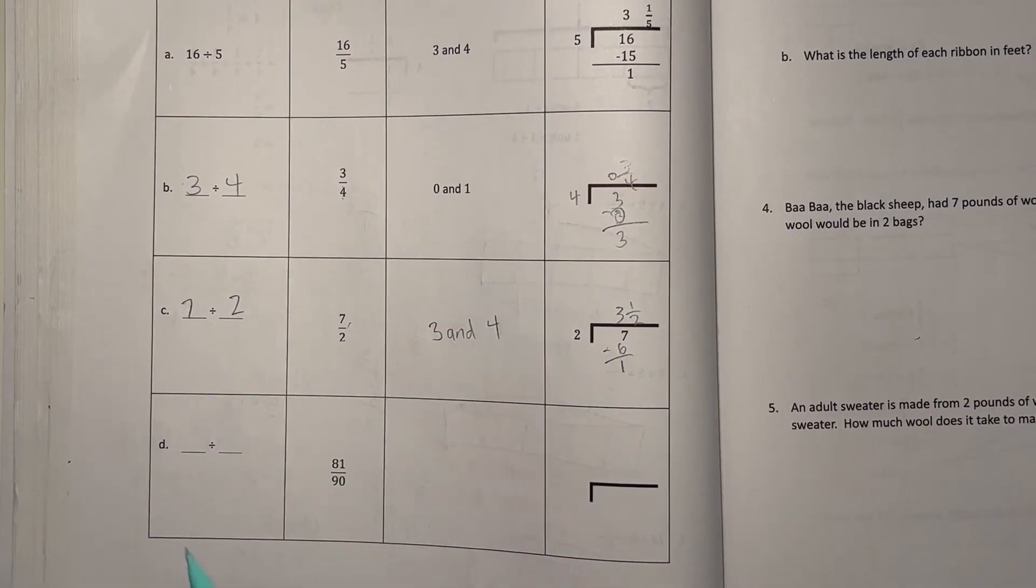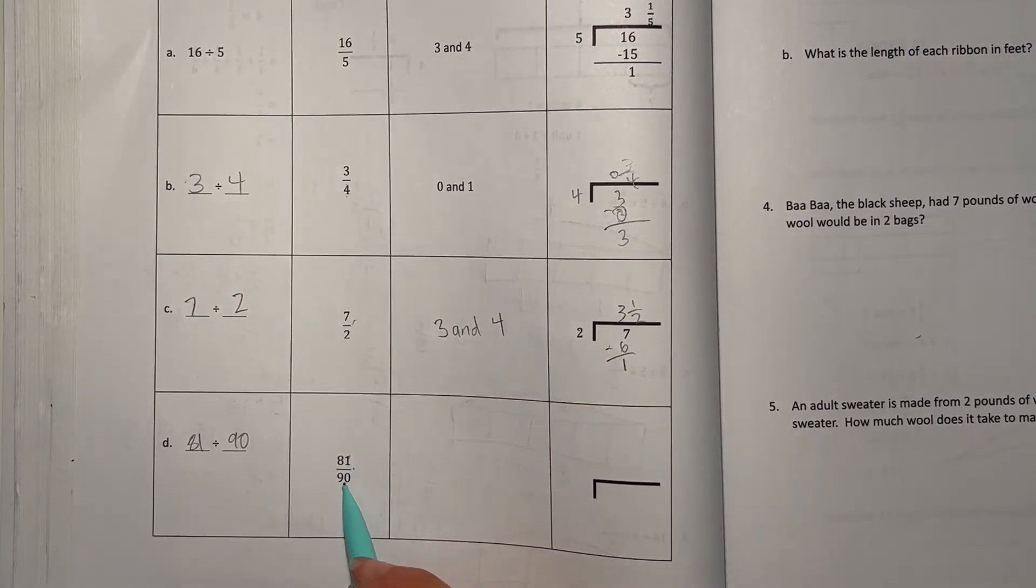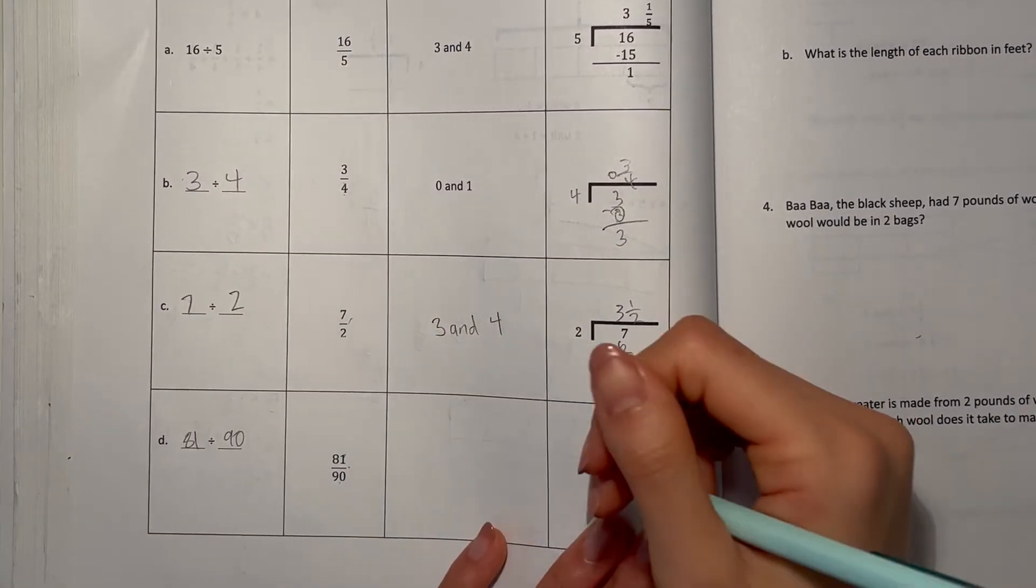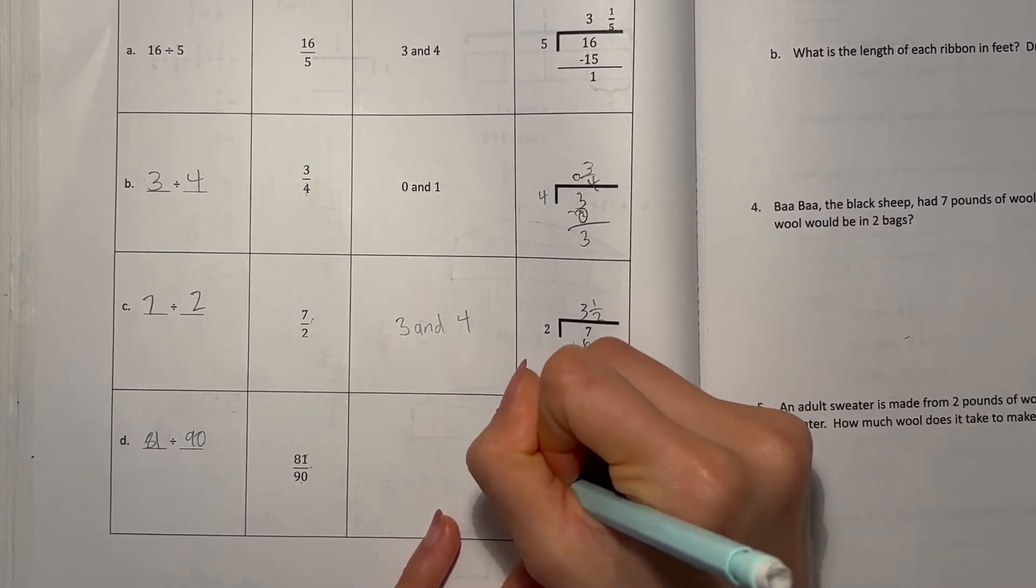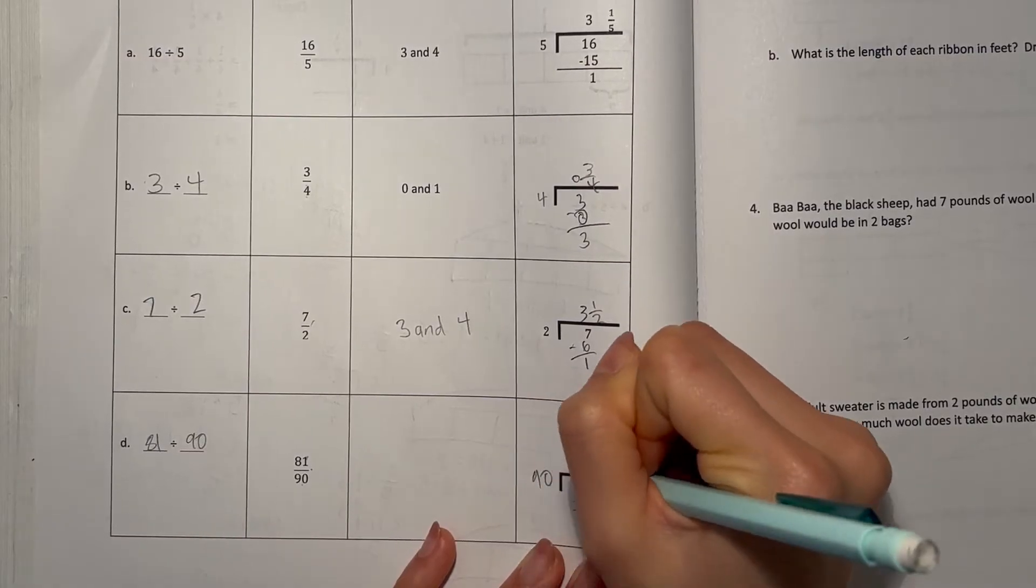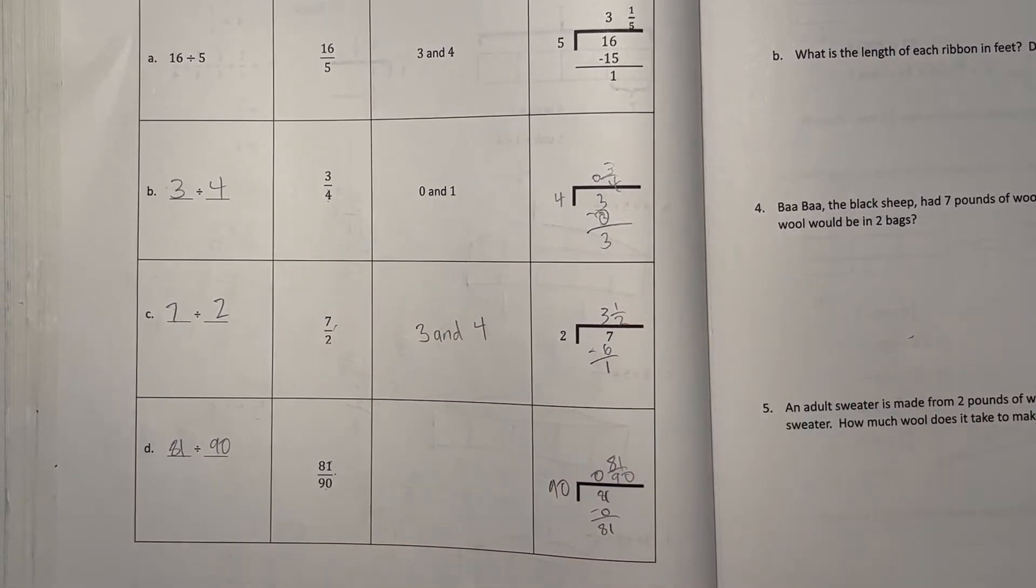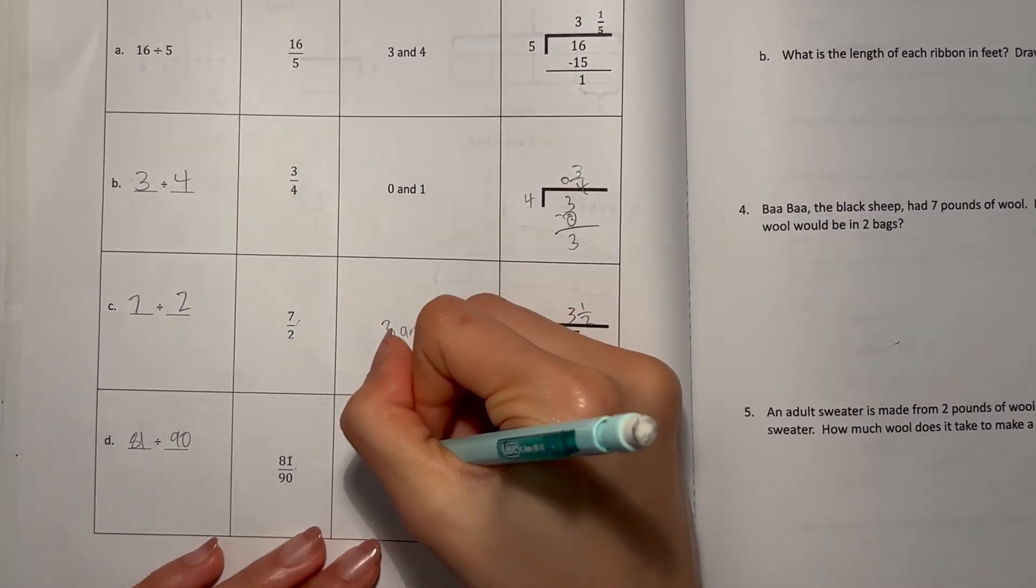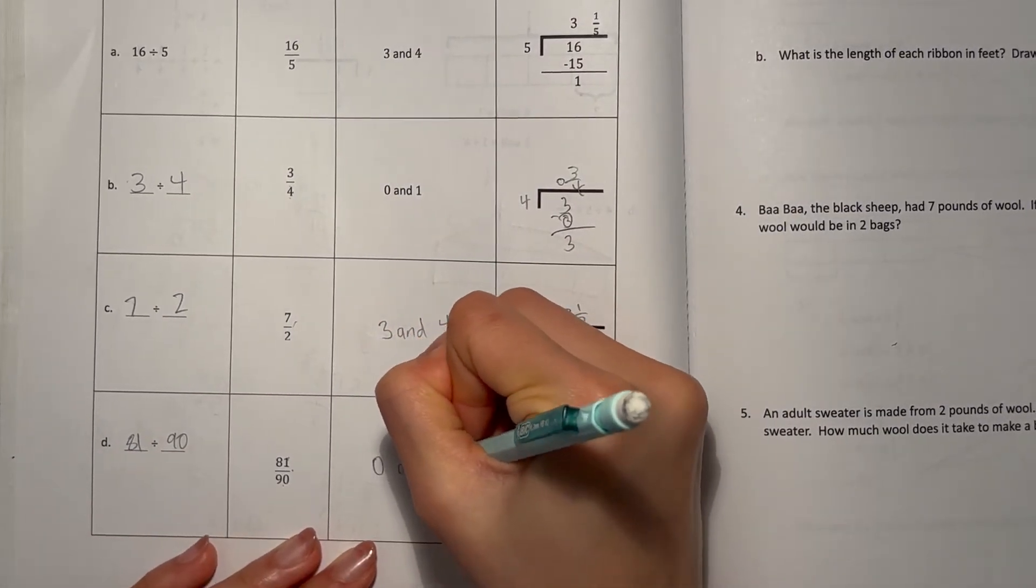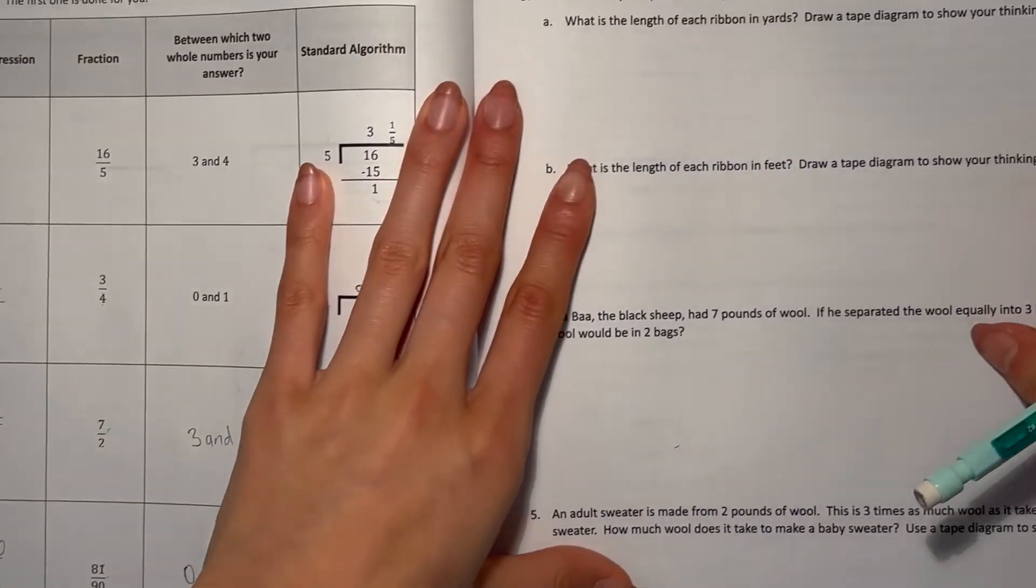And D, 81 divided by 90. So your standard algorithm first, 81 divided by 90, 90 goes 0 times into 81, so it's 81 over 90, and that's not even 1, so it's in between 0 and 1, because it's more than 0, but less than 1.